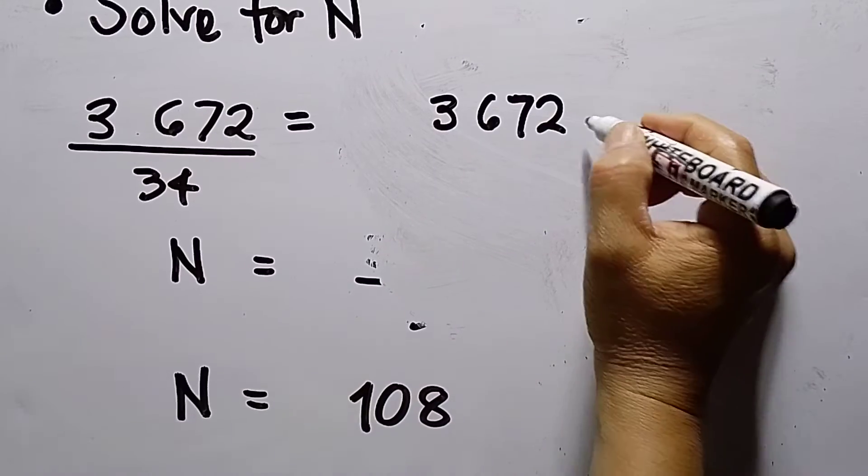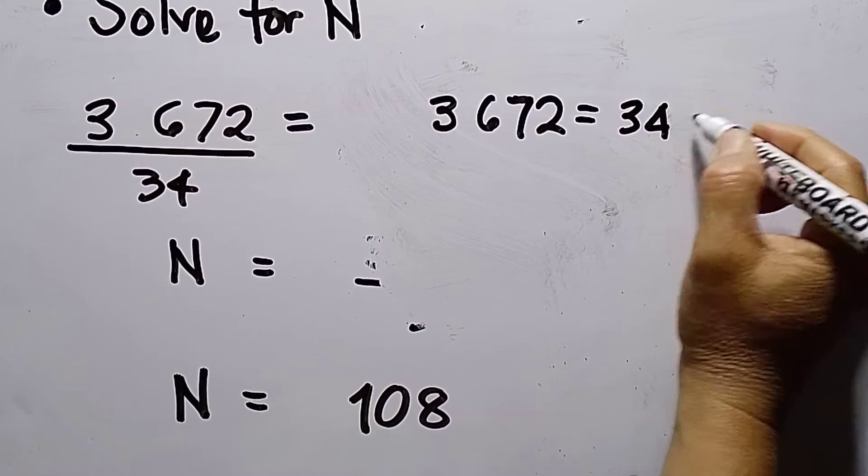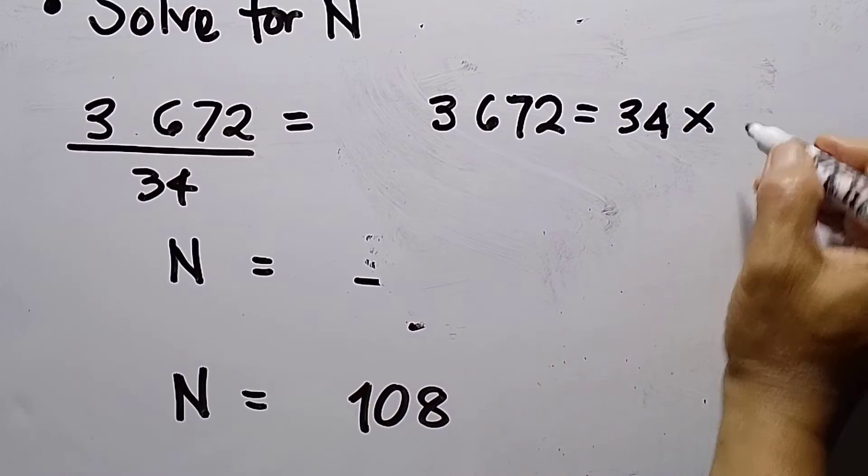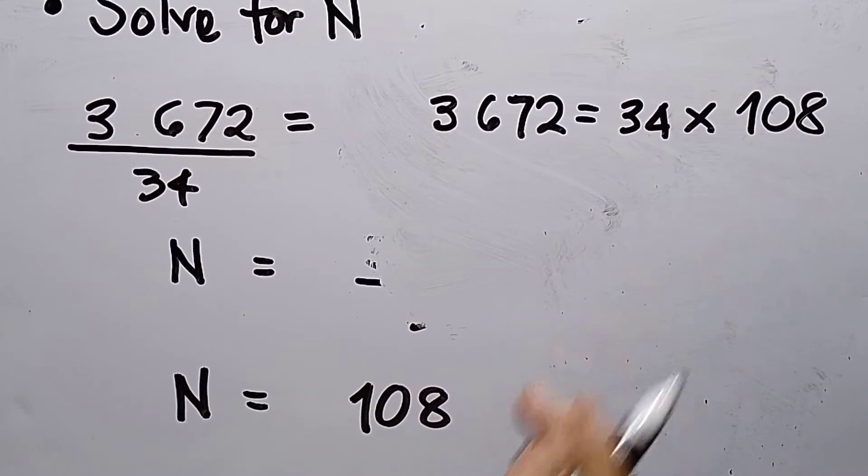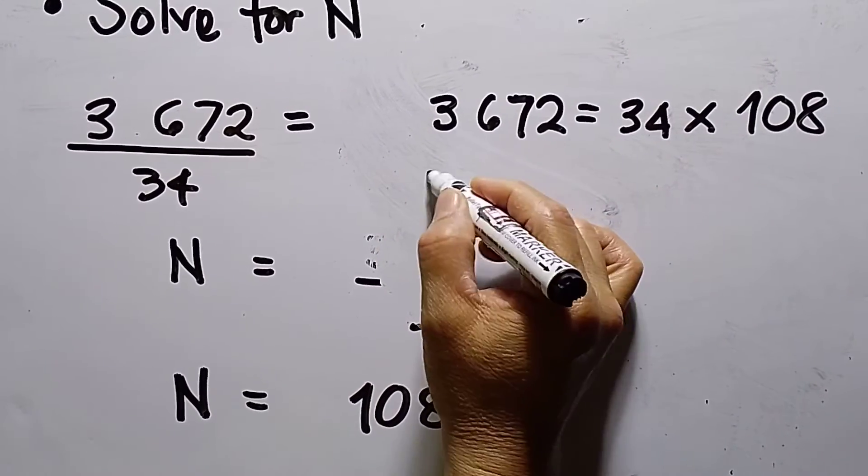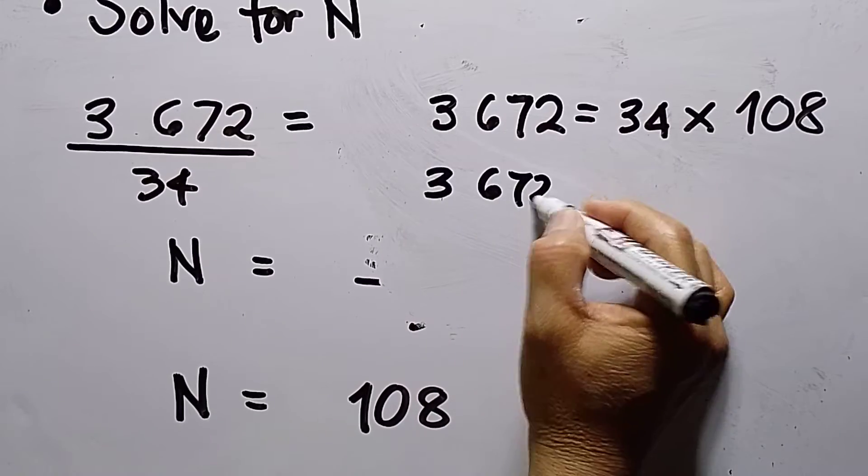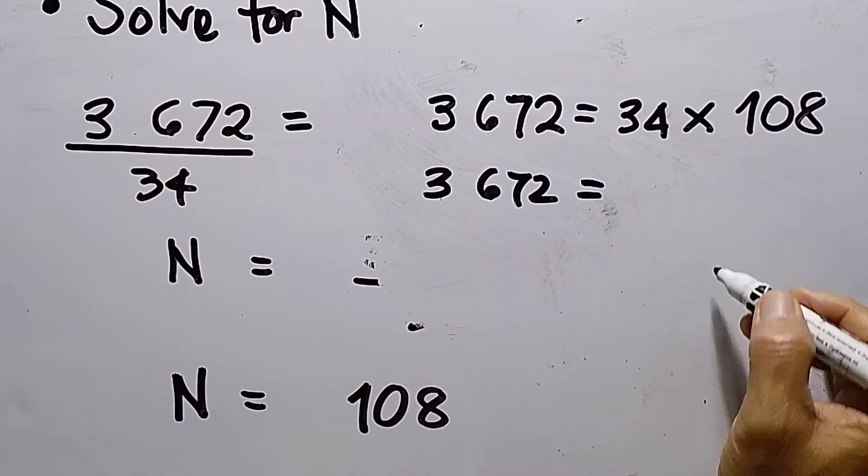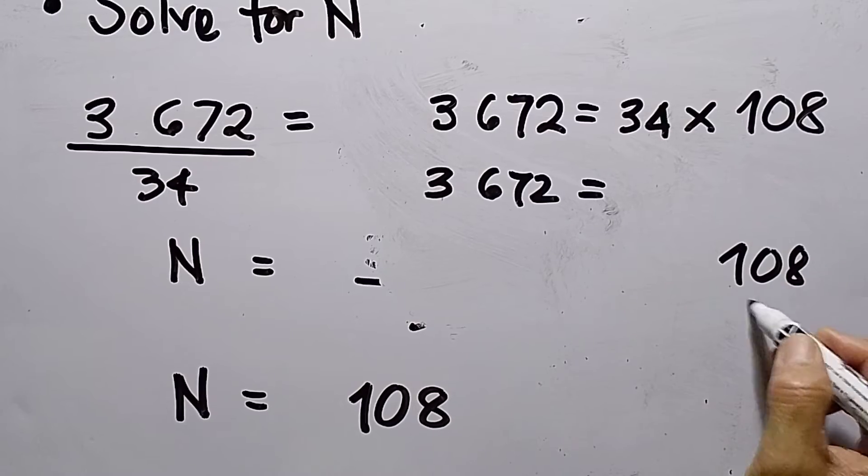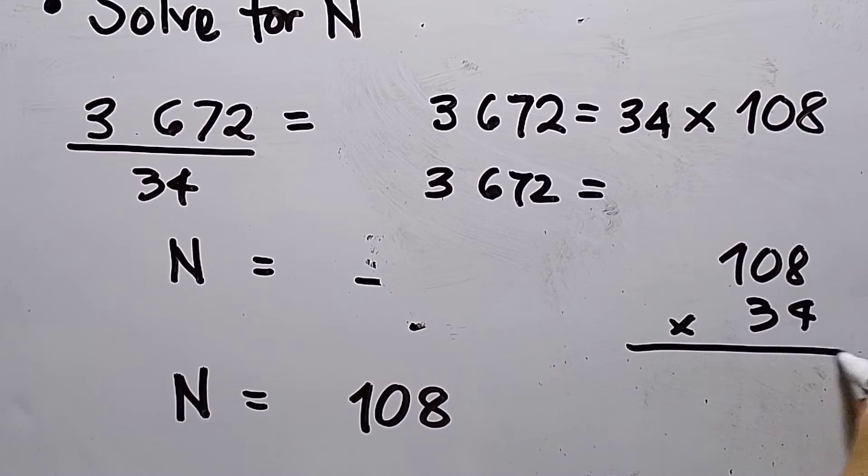3672 is equal to 34 times N. Now my N is 108. Let us see if this is correct. So this is 3672 at the left side. How about 108 times 34?